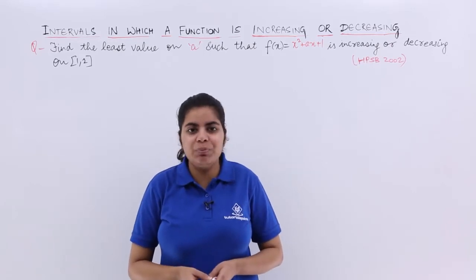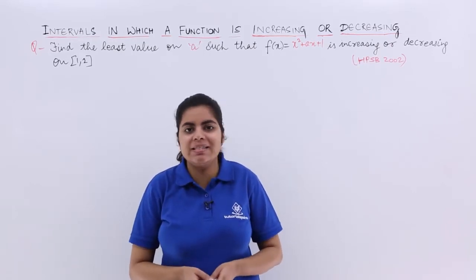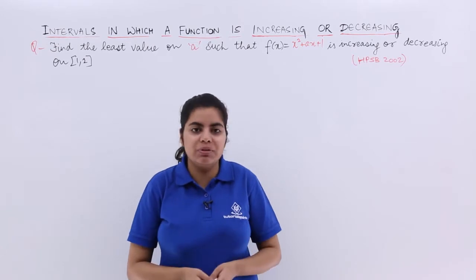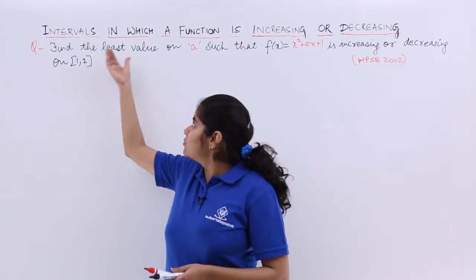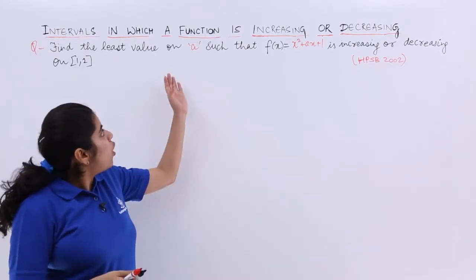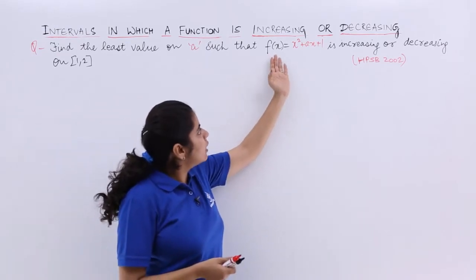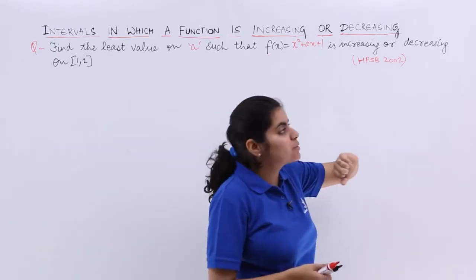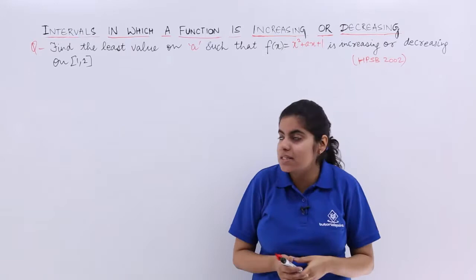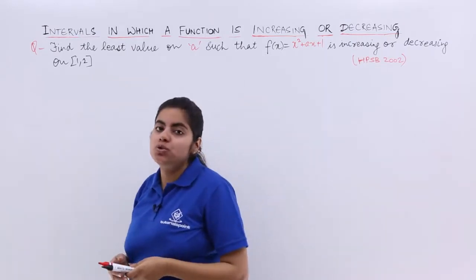In this video, let's see another numerical problem based on increasing and decreasing functions on intervals. The question says find the least value of A such that f(x) = x² + ax + 1 is increasing or decreasing on the interval [1, 2].